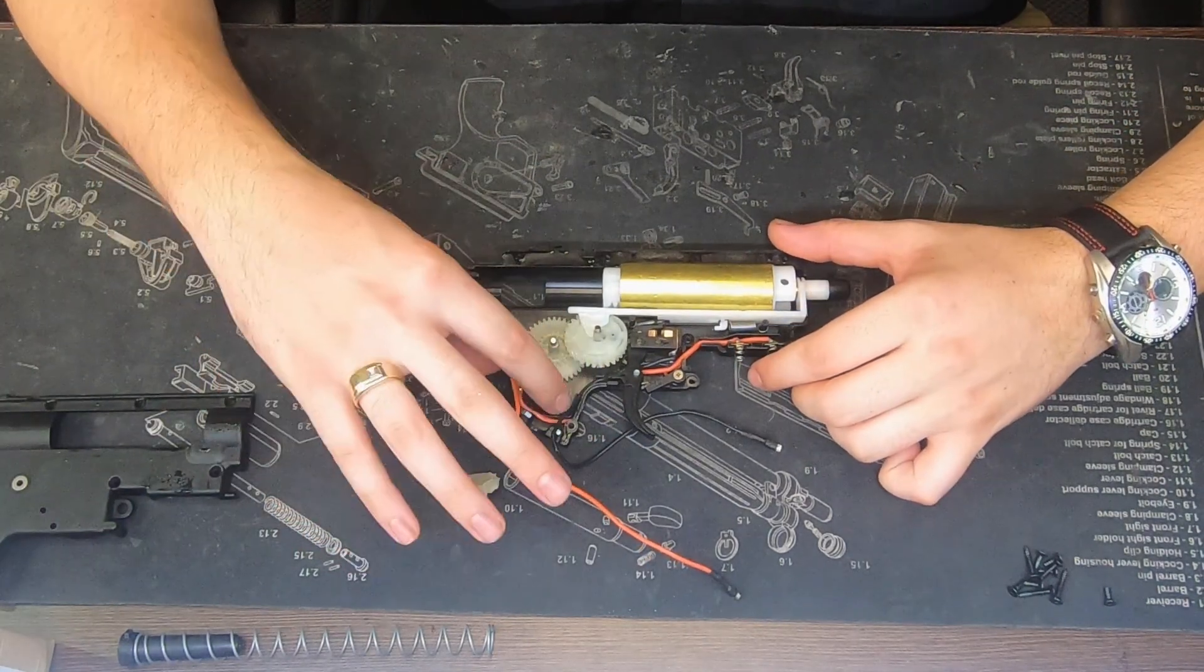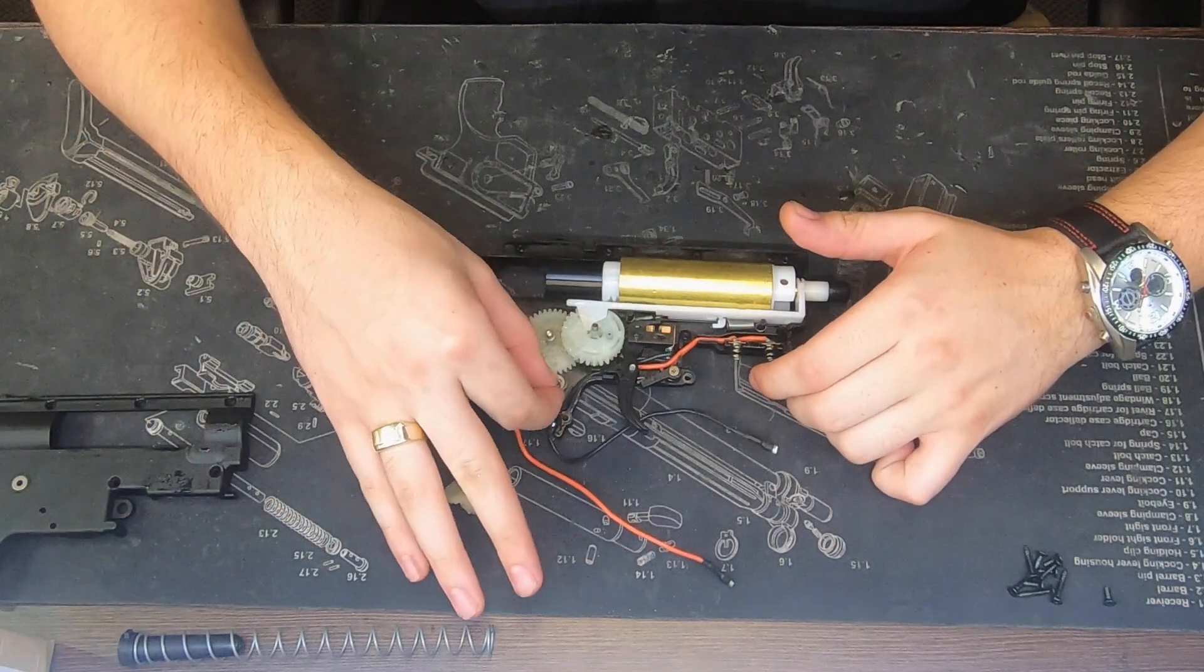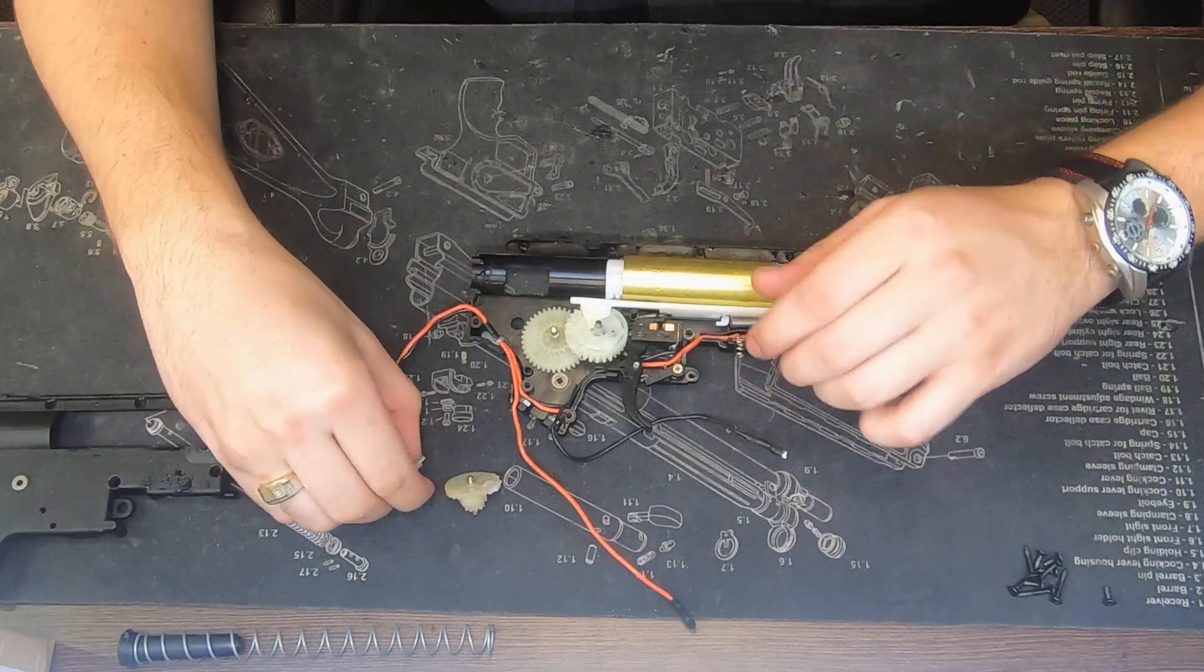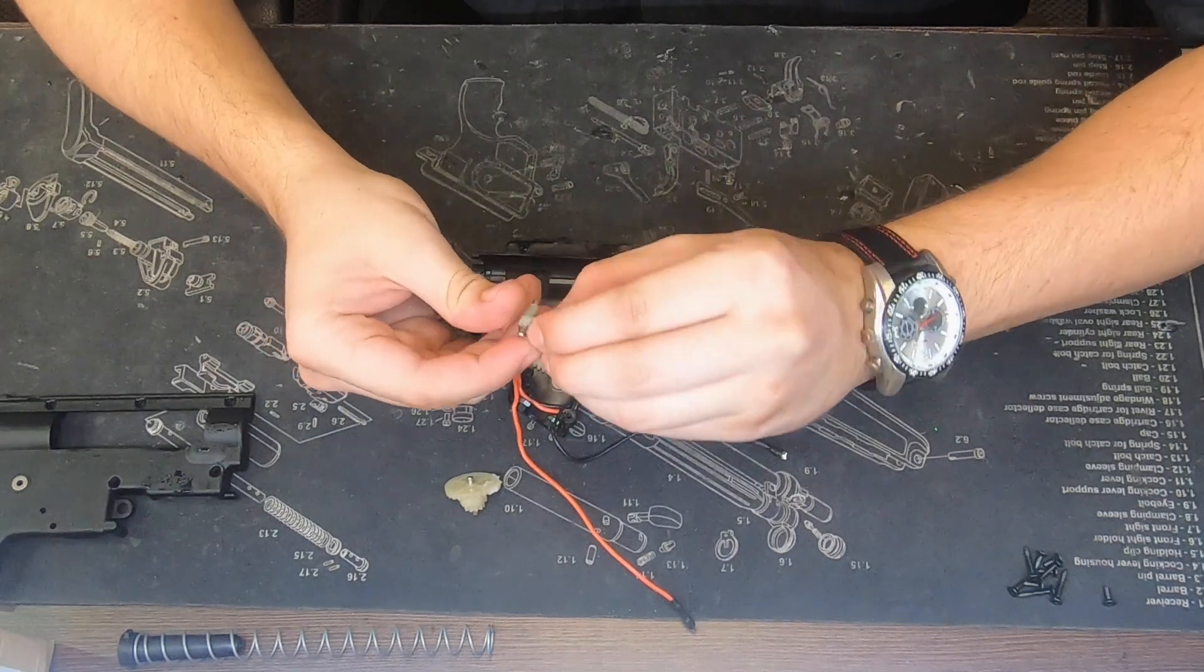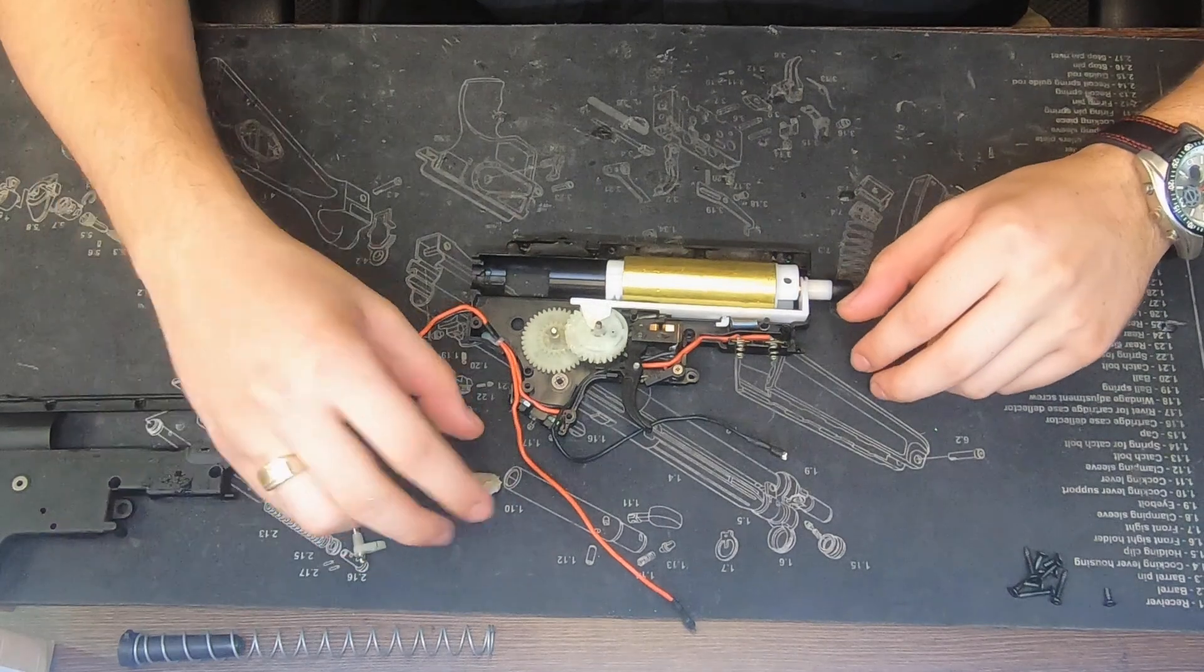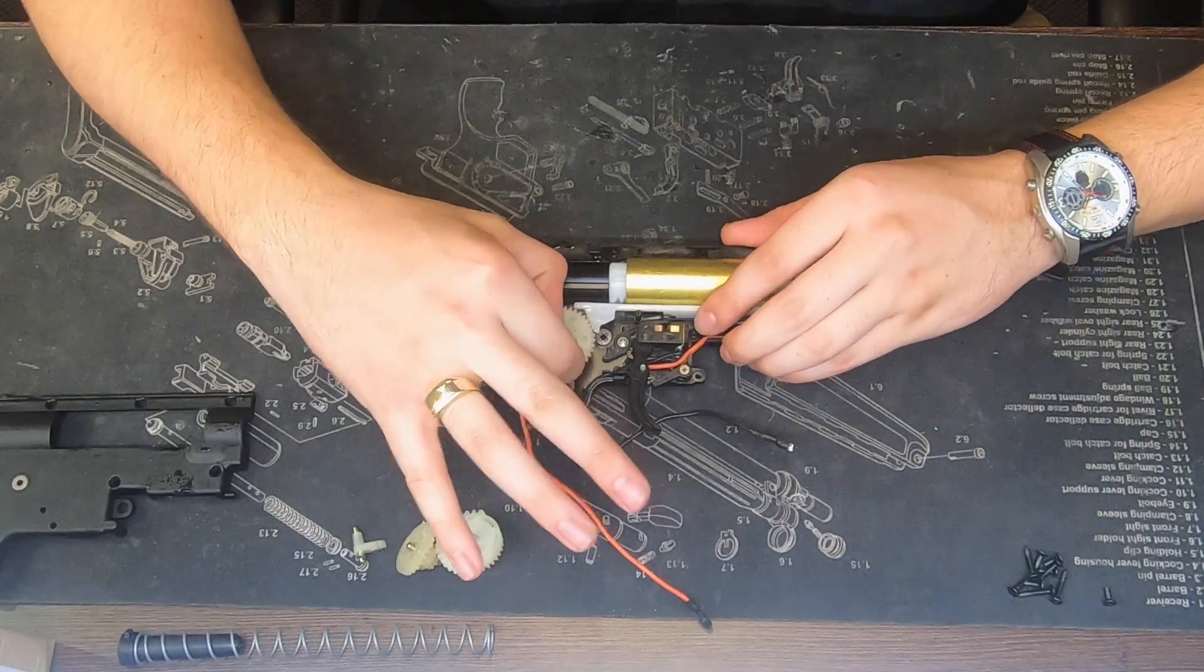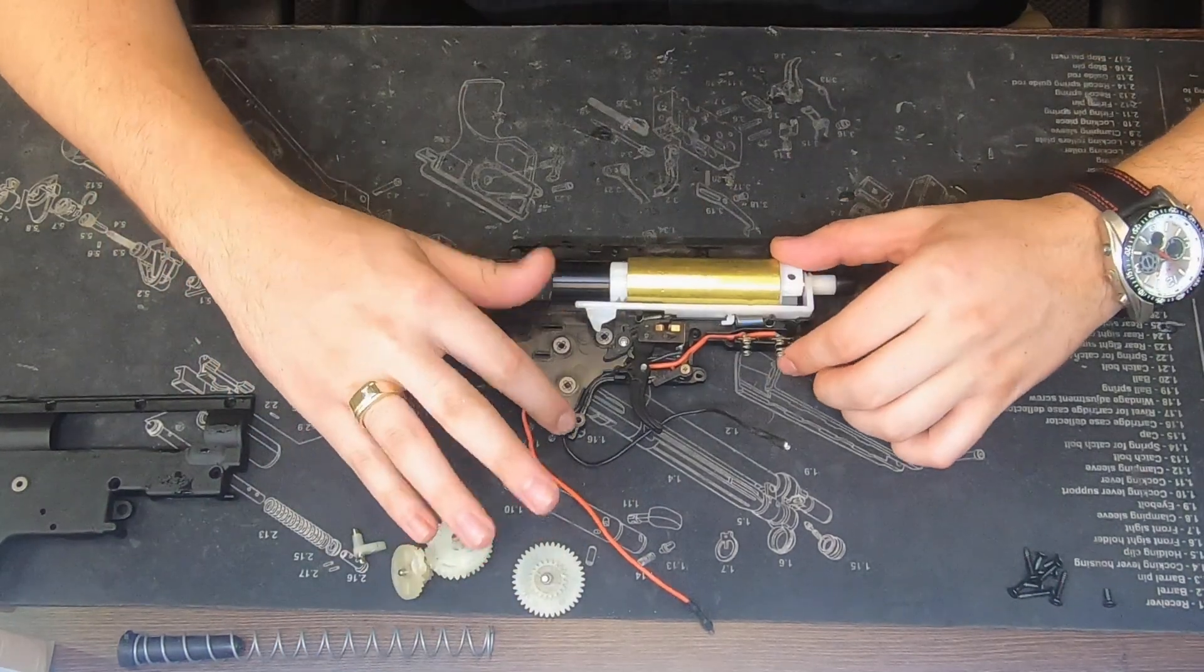Now we have this. So if you guys are following along and opening it for yourself, do be wary of the anti-reverse latch and spring, which if you don't know what that is, it is this. So the spring just sits on like that, the anti-reverse latch. There's the bevel gear, there's the sector gear, there's your spur gear.